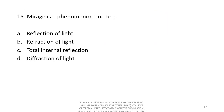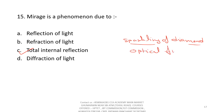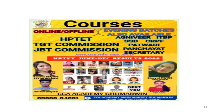This is the last question: mirage is a phenomena due to? Options: reflection of light, refraction of light, total internal reflection, diffraction of light. Right option is total internal reflection. Mirage effect is based on total internal reflection. Also, sparkling of diamond and optical fiber are based on total internal reflection. I hope this video was helpful — please like, share and subscribe. Thank you.